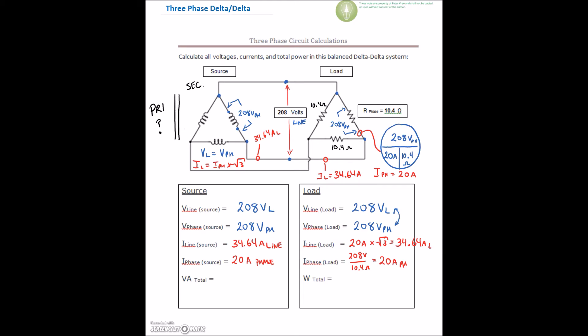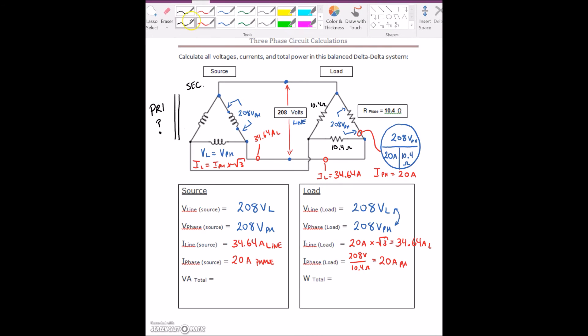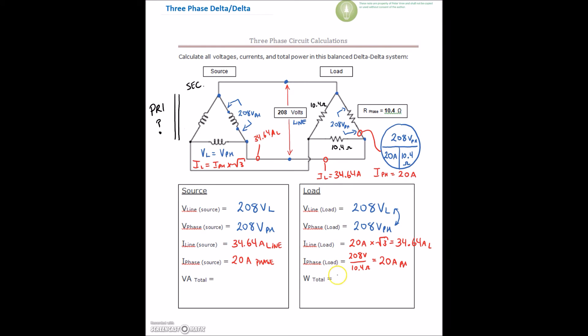Last thing we need to do is we need to find our total wattage and VA. So I've used VA for the secondary, but really we're just looking for wattage because we have a resistive load. We don't have any coils or capacitors there yet. So we have a number of ways we can find those values.